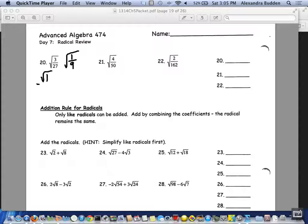I'm going to split that up into two square roots, so the square root of 1 over the square root of 9. The square root of 1 is just 1, the square root of 9 is 3. So 1 third is my final answer. 21 and 22 are very similar to 20.